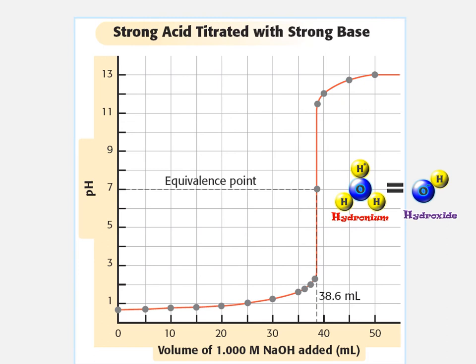The equivalence point can be reached starting from an acid with a very low pH — say below 1. If you start pouring base into that, it would generate hydroxide to neutralize some of the hydronium. But pHs are logarithmic, so to change by even one pH unit, you have to change by a factor of 10. You would need to neutralize 90% of the original hydronium just to change by one pH.